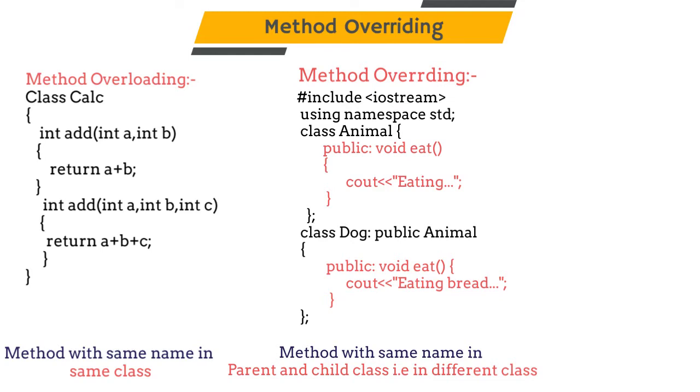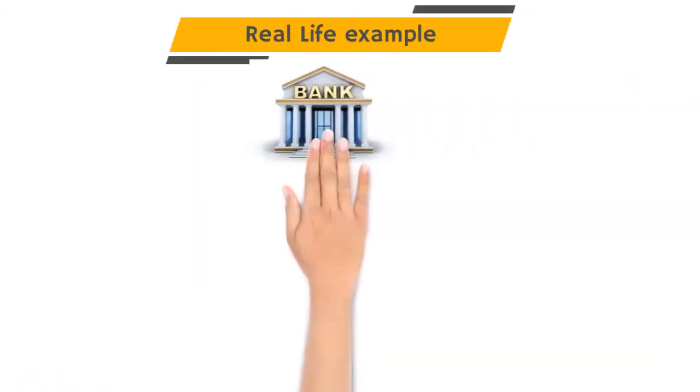Method overriding is used to provide specific implementation of that function or method. Consider a real life example of a bank.